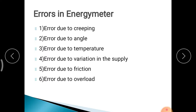Errors in the Energy Meter: First, error due to creeping — the disc should rotate only when connected to a load. But sometimes, even without a connected load, the aluminium disc starts to rotate. This is called creeping error, as the disc is consuming energy when it should not be rotating.